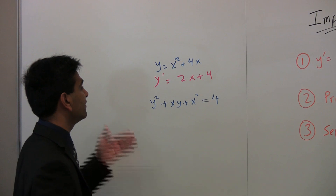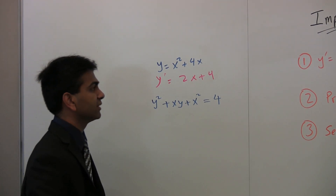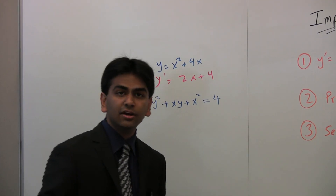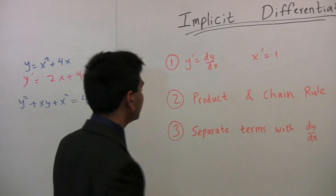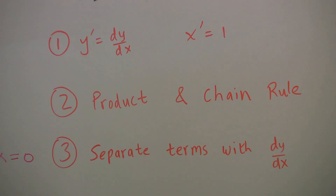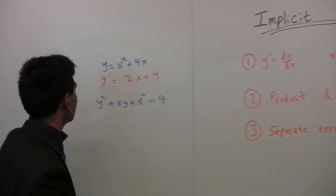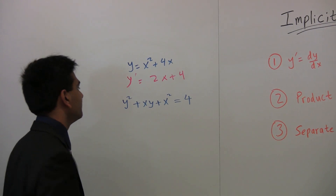Finding the derivative of an implicit function is what implicit differentiation is. Here at Far From Standard, we have a simple three-step process that you should use when doing implicit differentiation. The first thing to keep in mind is that the derivative of y is dy/dx, and the derivative of x is 1. Now let's keep these two things in mind and try to find the derivative of this function.